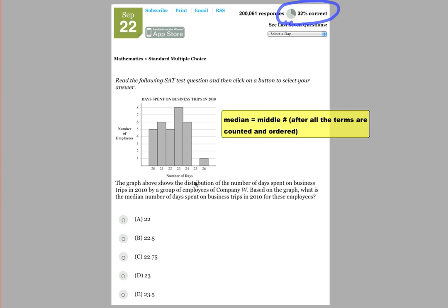The graph above shows the distribution of the number of days spent on business trips in 2010 by a group of employees of Company W. Based on the graph, what is the median number of days spent on business trips in 2010 for these employees?